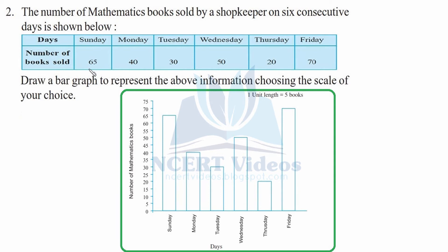For Sunday, it is 65, so we will draw the bar up to a height of 65, meaning 65 books are sold. On Monday we have 40, on Tuesday 30, and on Wednesday 50. Note that the gap between bars has to be equal and the bar width also has to be equal. For Thursday, we have 20 books sold.